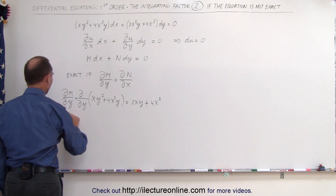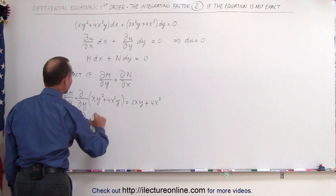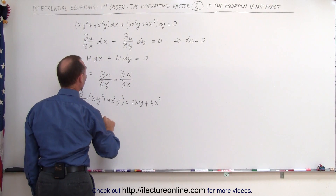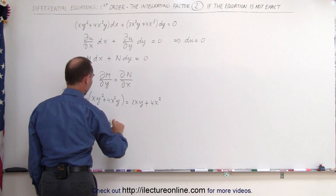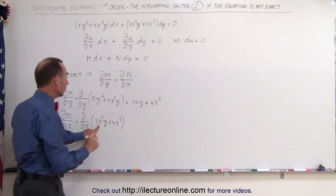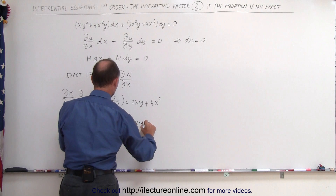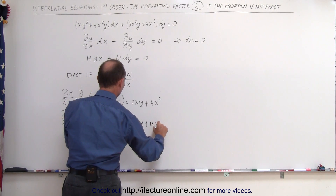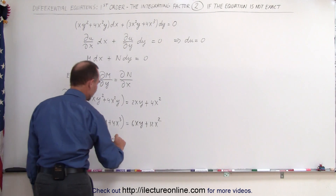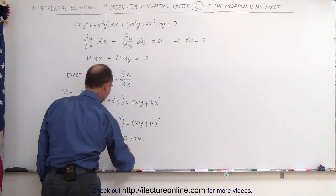Now the partial of N with respect to x is equal to the partial with respect to x of the quantity 3x²y plus 4x³. Remember, y is a constant and x is the variable, so this equals 6xy plus 12x². You can see those are not equal to each other, so therefore they are not exact.